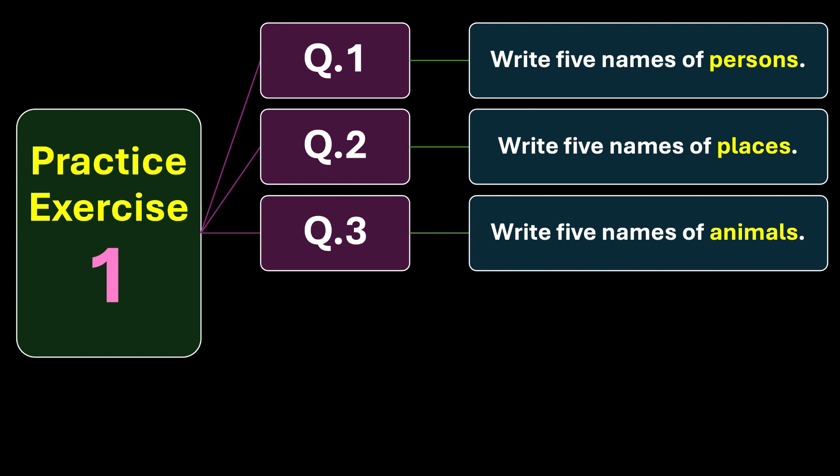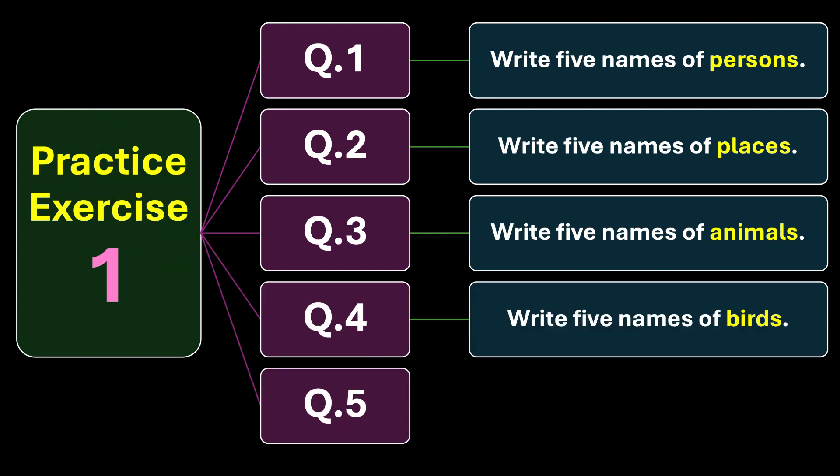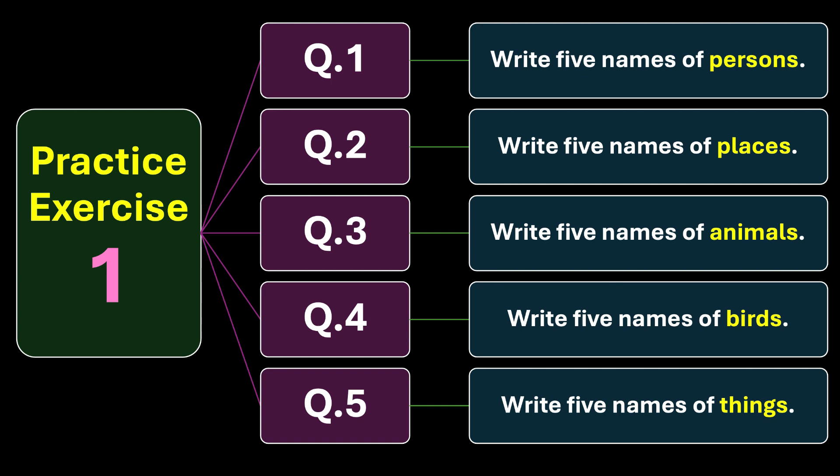Question number four: write five names of birds. And question number five: write five names of things. In total you will have 25 names. If you write as a part of practice, you will better have the understanding of what are nouns around you - what are names around.